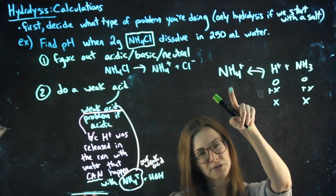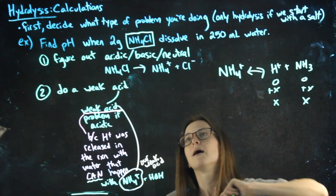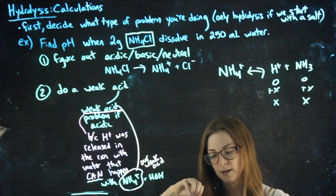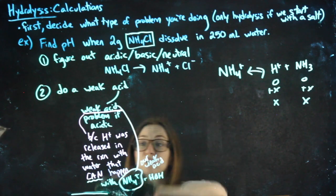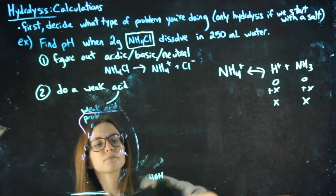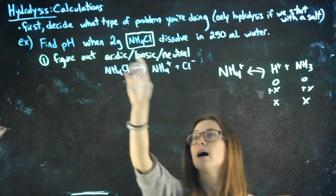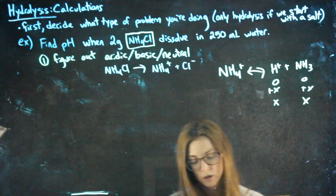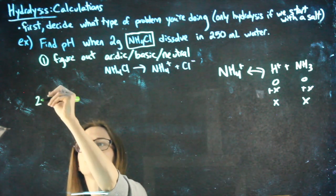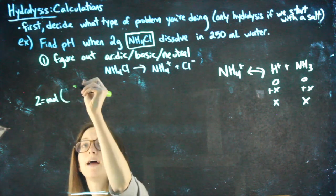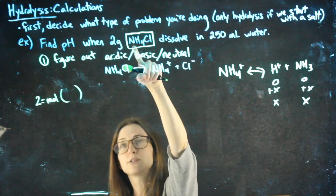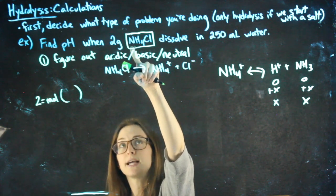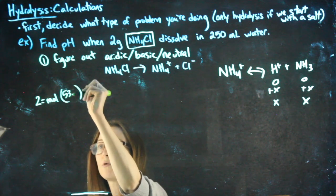I have grams, which I can turn into moles, and moles I can turn into molarity. In terms of showing your work fully for full credit, NH4 plus is my weak acid. I don't have the grams of NH4 plus. I have the grams of the whole salt. So I can take those two grams and find the moles to then find the molarity, but I need to use the molecular weight of NH4Cl.